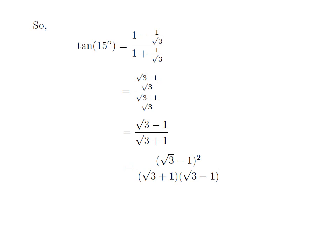Now, the numerator becomes the square of square root of 3 minus 1, and in the denominator it is square root of 3 minus 1 into square root of 3 plus 1.